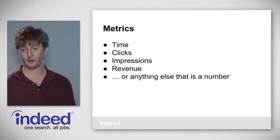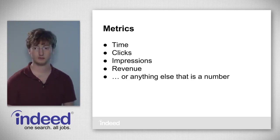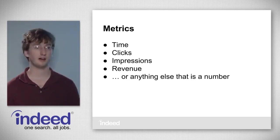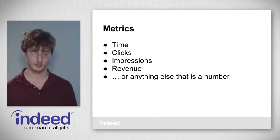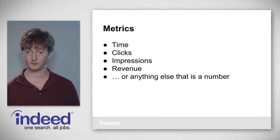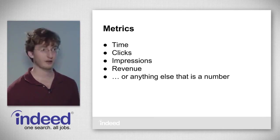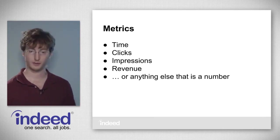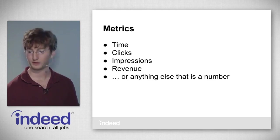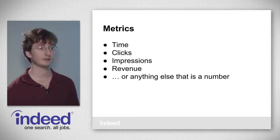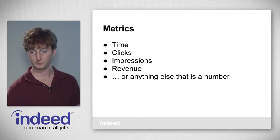Some examples of metrics: time is a metric — there's one time value per document in our job search index, the time at which the event occurred. Clicks is a metric — how many clicks happened. Impressions is a metric — how many jobs we show. Revenue is another very important metric. Anything that's a number with exactly one value per document is a metric.